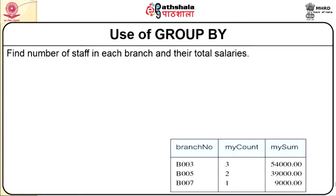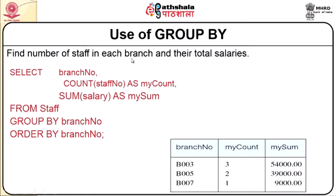First, we will look at the use of the GROUP BY clause. Consider the natural language query: find the number of staff in each branch and their total salaries. This may be converted as: SELECT branch number, COUNT the number of staff by staff number as my_count, SUM of salary as my_sum FROM the staff table, GROUP BY branch number and ORDER BY branch number.